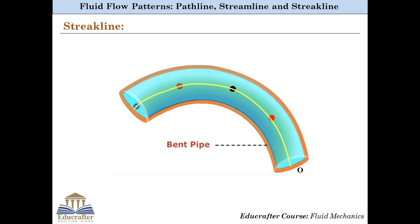We have defined all three lines using the same example, and if you recall, you will realize that the streamline, the pathline and the streakline all coincide with each other. The reason is that the example we saw is a case of steady fluid flow, where the flow variables at every part of the domain do not change with time. In the case of steady fluid flow, all three lines always coincide.